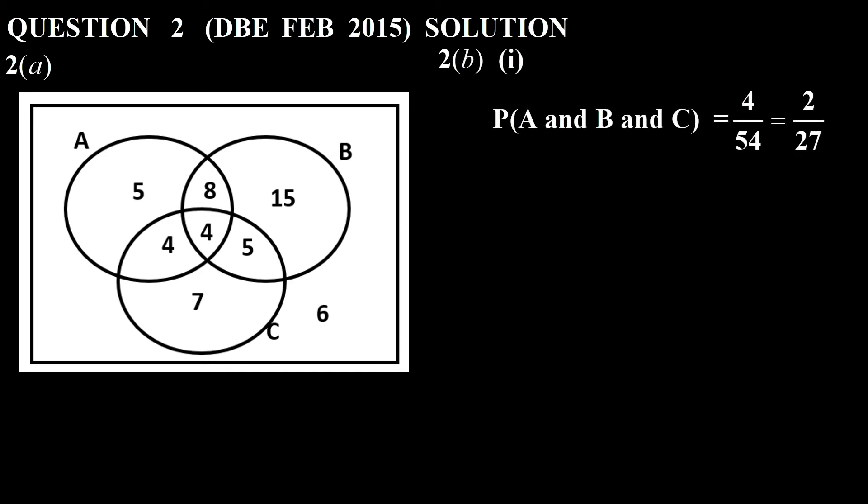Then we have to find the probability of A, B and C. And this is the region A, B and C, which is 4. 4 over 54. We simplify that. That's 2 over 27.